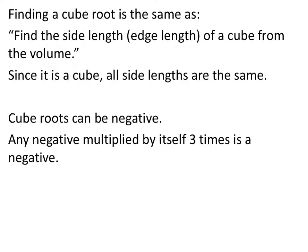Finding a cube root is the same as asking for the edge length of a cube if you're given its volume. Since it is a cube, all side lengths are the same — kind of like a square. Cube roots can be negative, because if you multiply any negative by itself three times, your answer would be negative. So keep this in mind. We use the same radical symbol but now it shows an indice of 3.